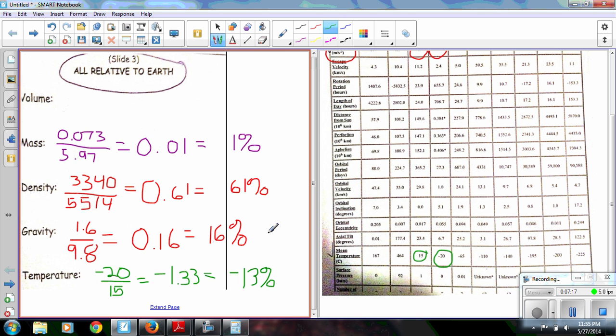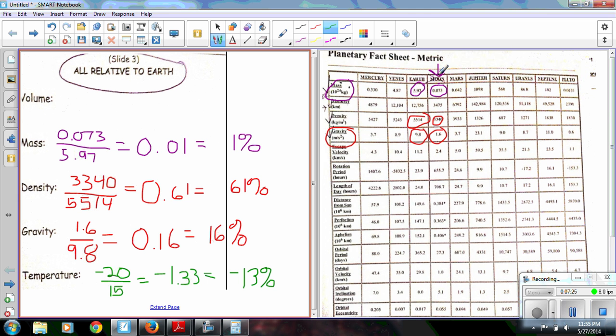Okay. So, as you can see, those are my calculations for mass, density, gravity, and temperature. And like I said, I did my calculations based on the moon. You are going to do your calculations based on the other planets that you've chosen. You might want to pause this video so you can do your calculations and follow my examples.